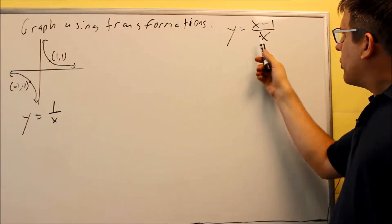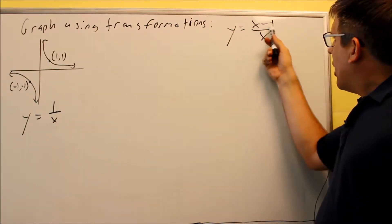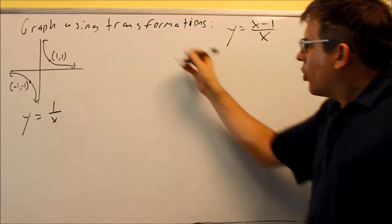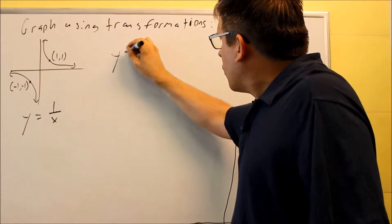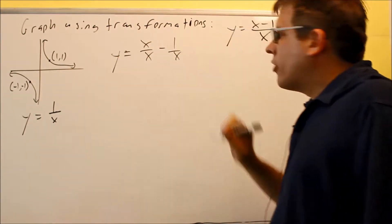So, for this one, what we want to do first is modify it. We're going to do that by splitting the fraction up. We're going to take the first term, divide by x, x over x, and then minus 1 over x.